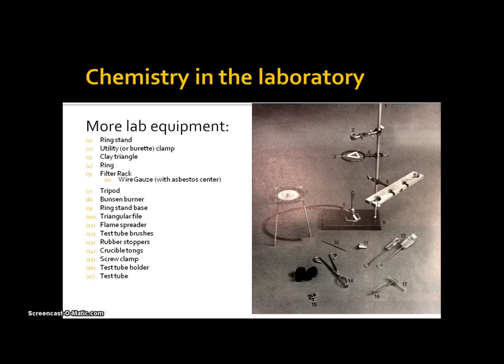Wire gauze, that's this here which is sitting on top of a tripod. The tripod actually serves the same purpose as this ring stand or as the ring, in that you can just lower it on top of the Bunsen burner and whatever is sitting on top of the ring can be heated up.